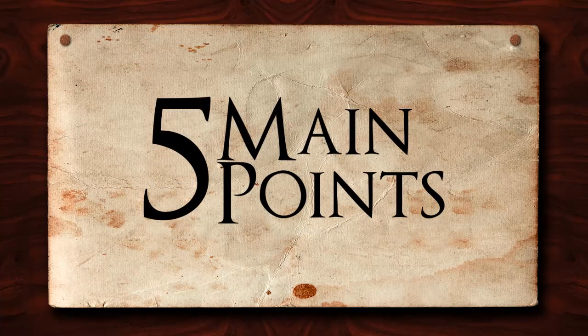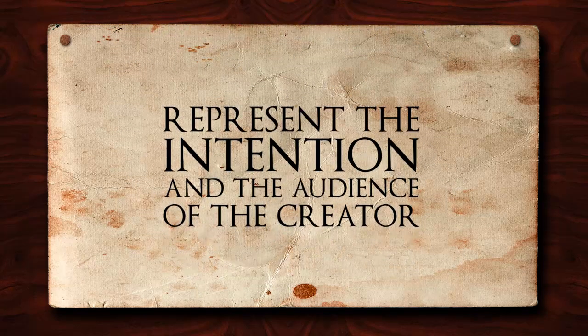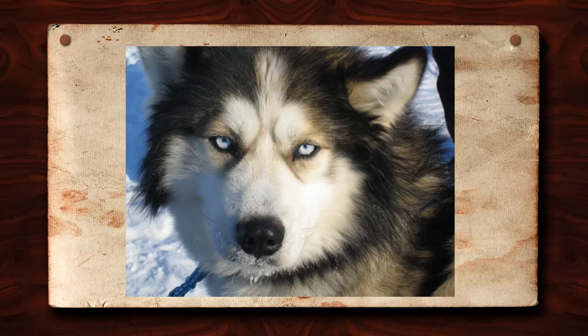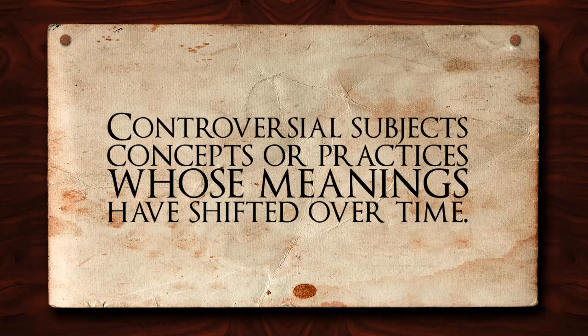As you begin to look for access points, there are five main points to keep in mind. The first is the need to be objective when selecting terms. It is important that we represent the intention of the creator of the materials when recording a subject, and not let our own values be represented. For example, if this dog were the subject of a subseries, the term used could easily be Siberian Husky or dangerous dogs depending on the intention of the materials' creator. This need for objectivity is particularly important for materials with controversial subjects or for concepts whose meanings have shifted over time.